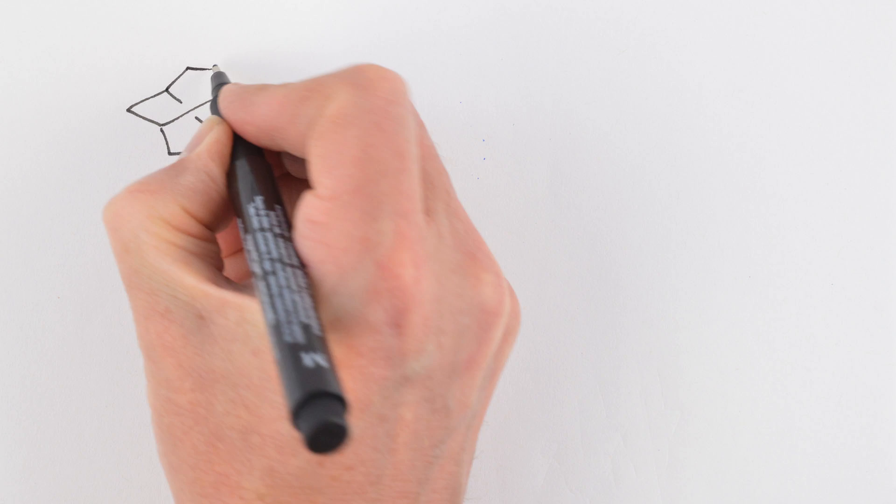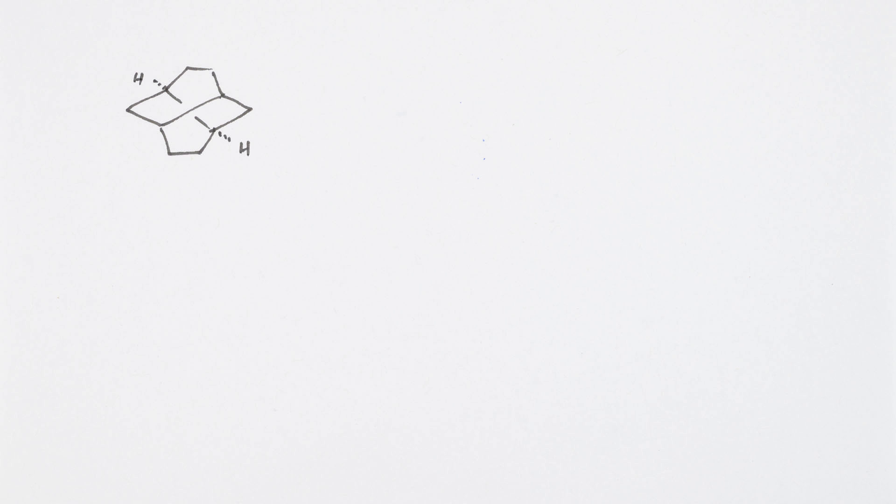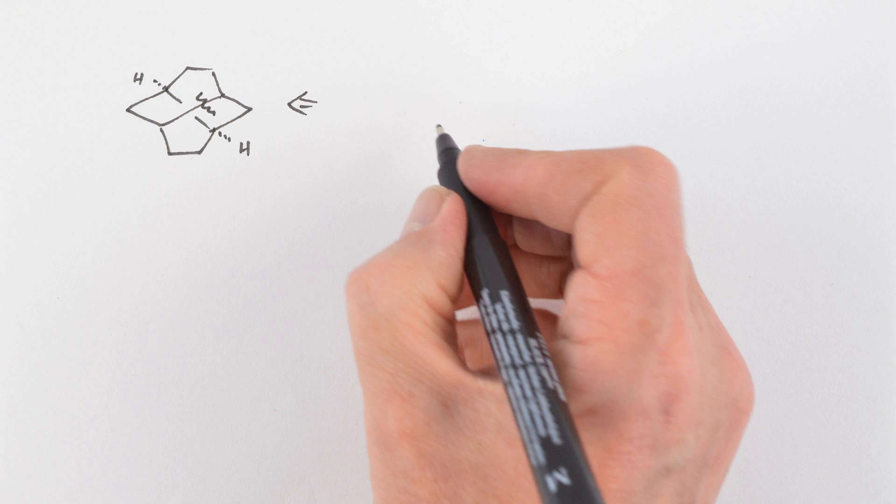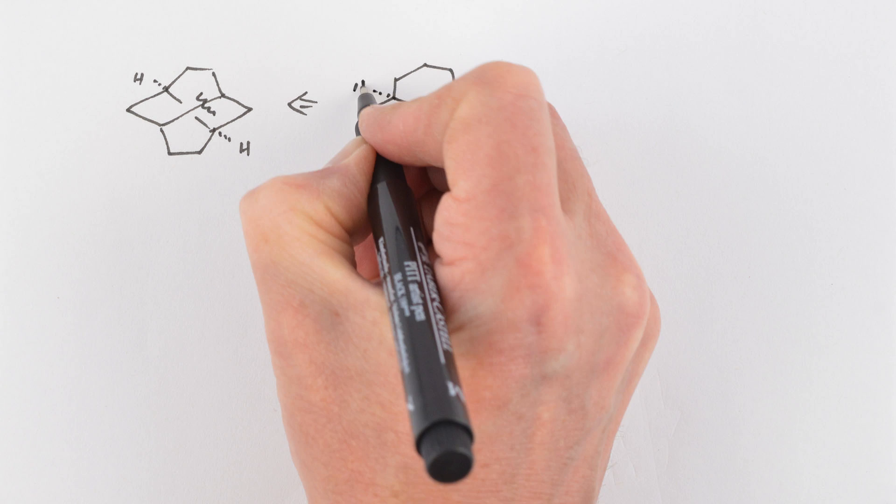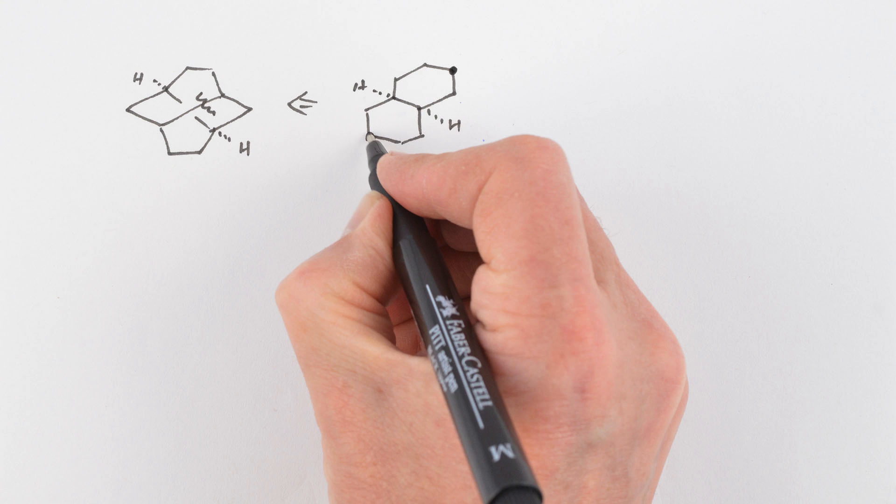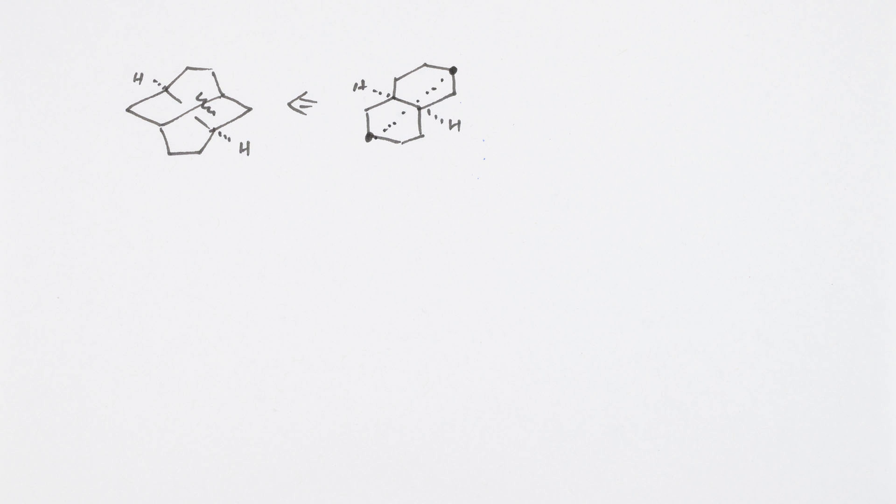A second synthesis of twistane by Pierre Delenchon involves a different disconnection. If we look at this twisted view, add some hydrogens here, which puts them cis at the back, and then disconnect the central bond, we end up with a cis-decaline system, where the bond to be formed has to be between these two carbons. How can we form that bond?